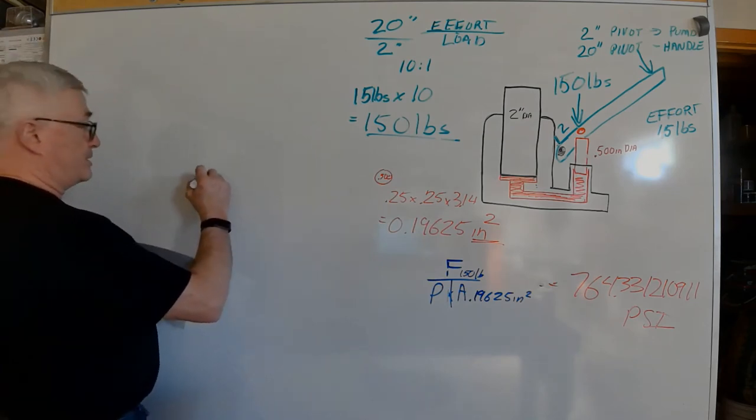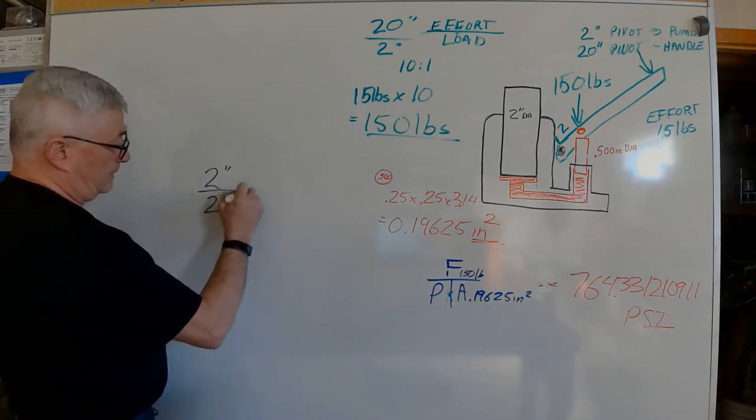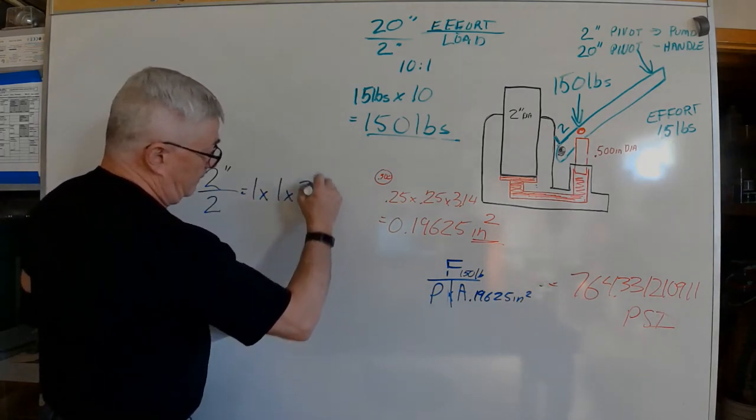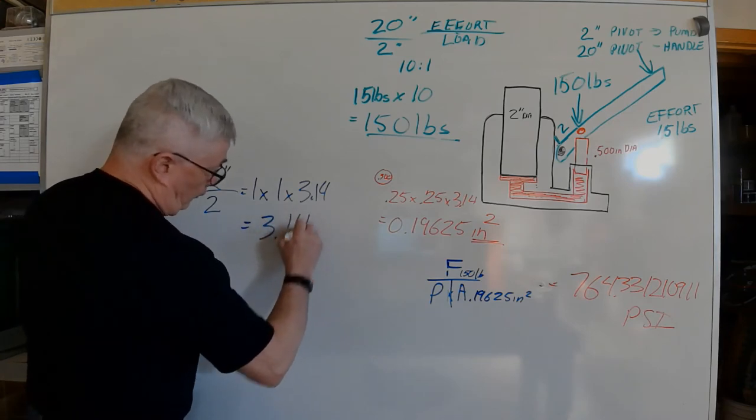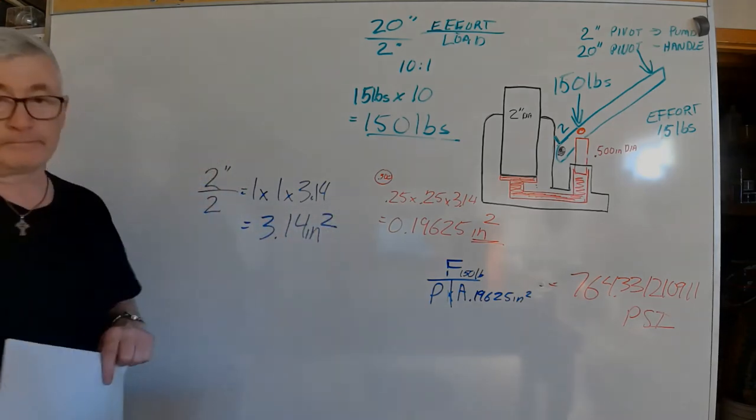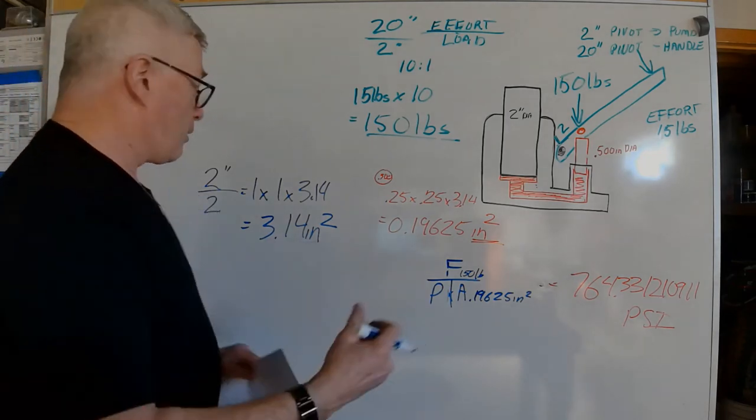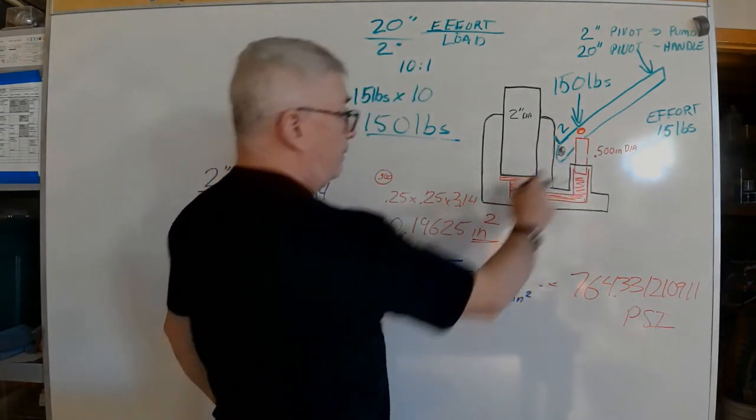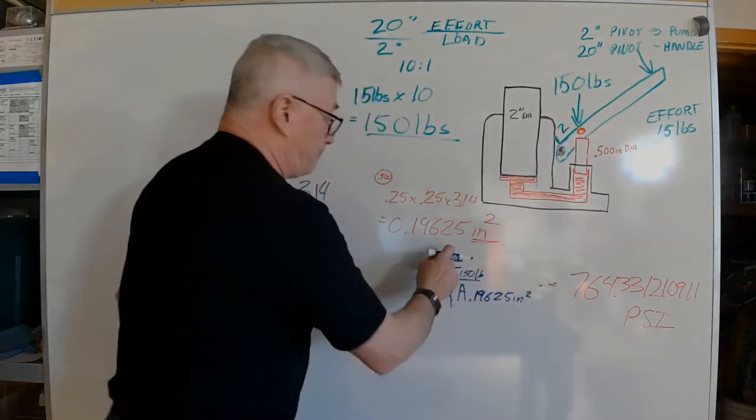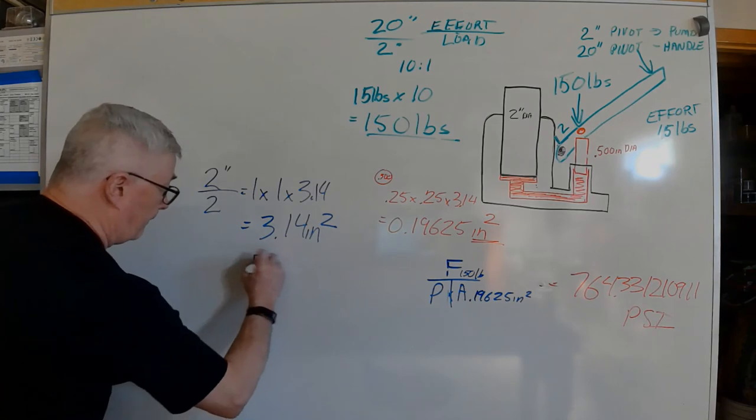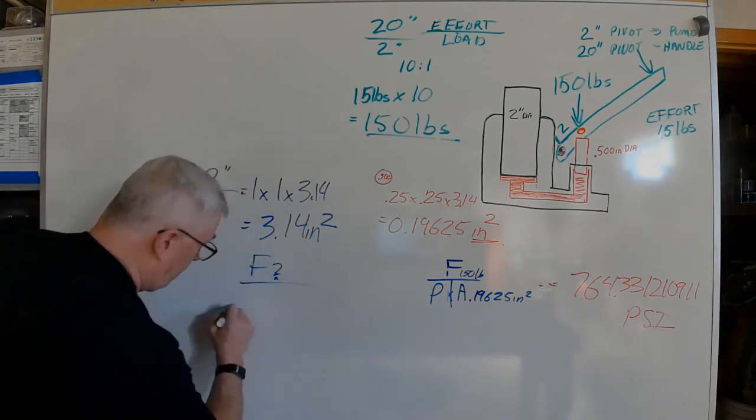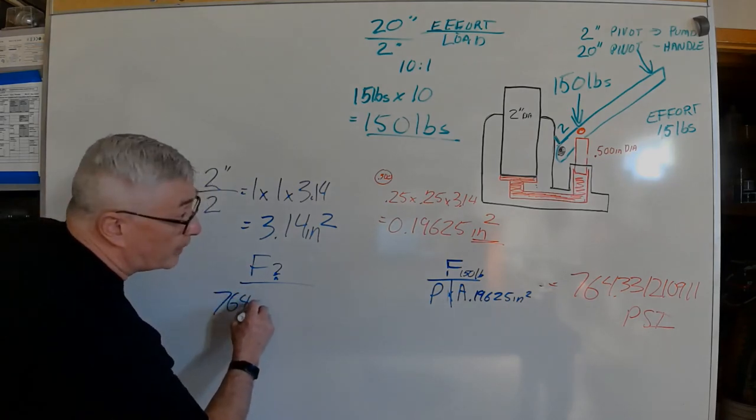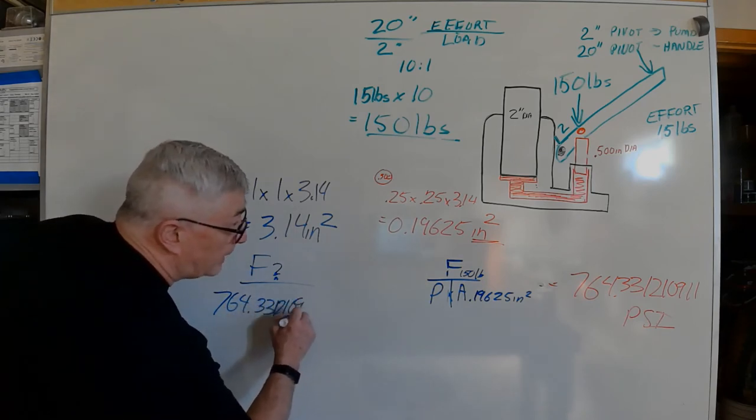I've kept the numbers pretty easy. Two inches divided by 2 equals 1, so 1 times 1 times 3.14 equals 3.14 inches squared. Pretty simple, I can do that one in my head. This is the area of this piston, this was the area of the ram. Now we're going to have Pascal's law again.